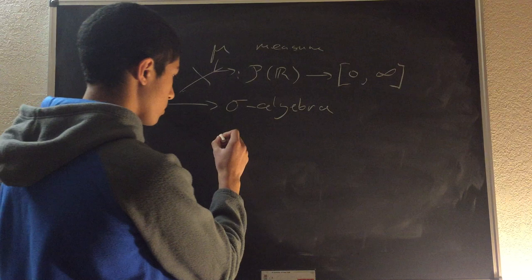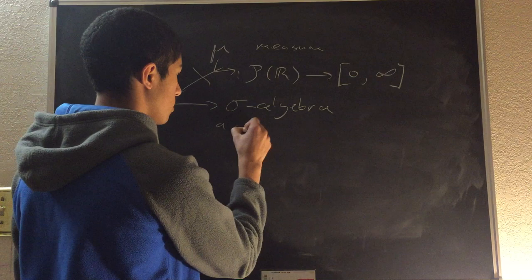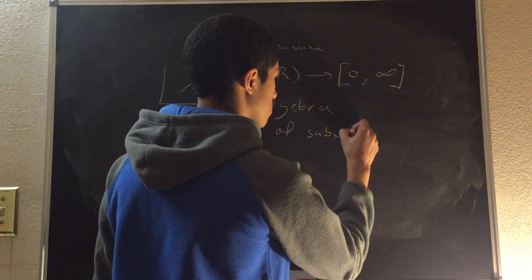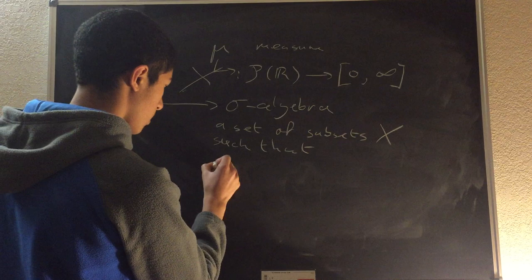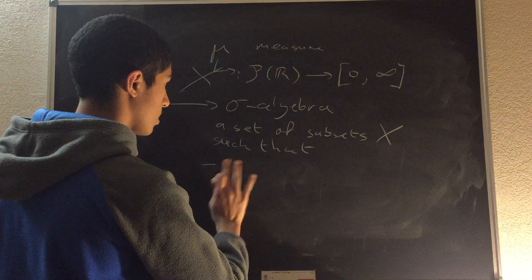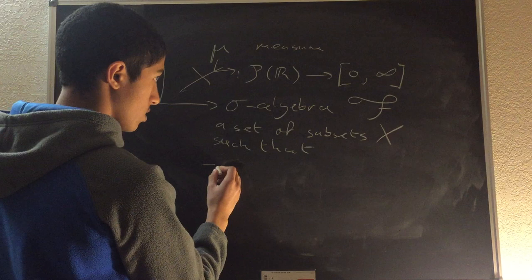It's a big scary word, but it means a very simple thing. A sigma-algebra is a set of subsets on some set X, such that three properties are followed. First, let's give it a name — let's call it curly F.